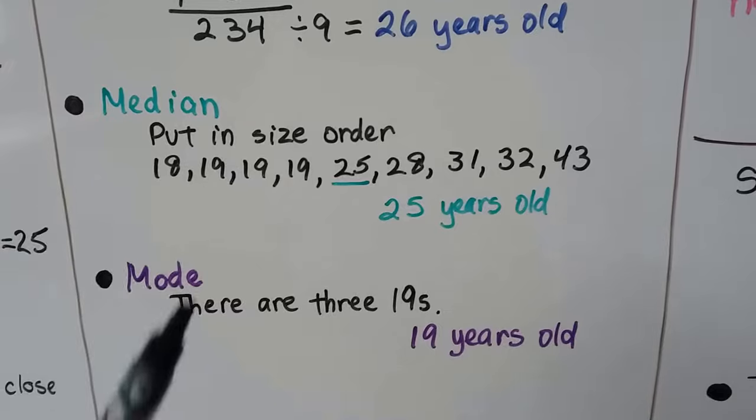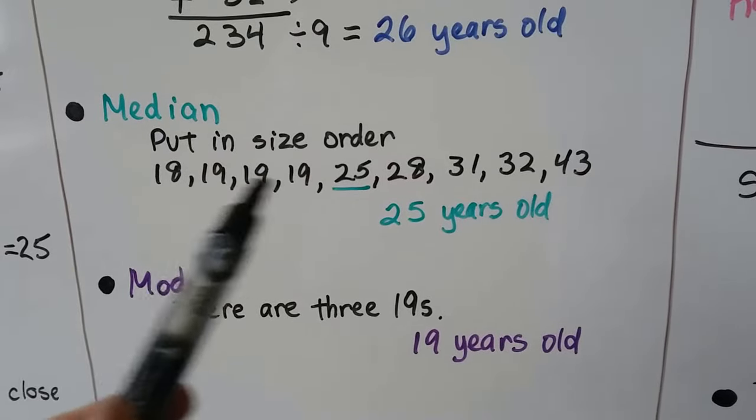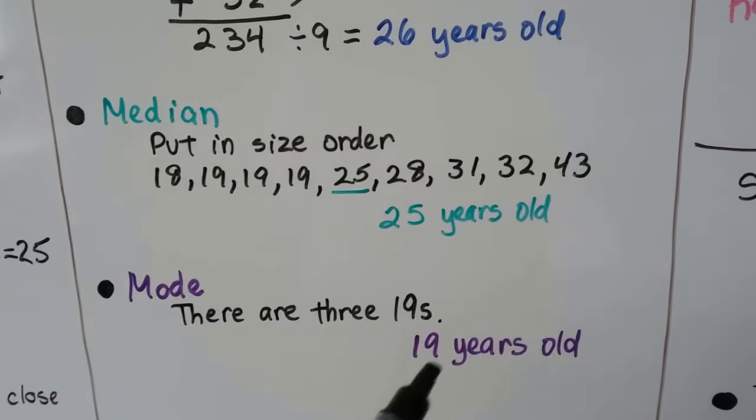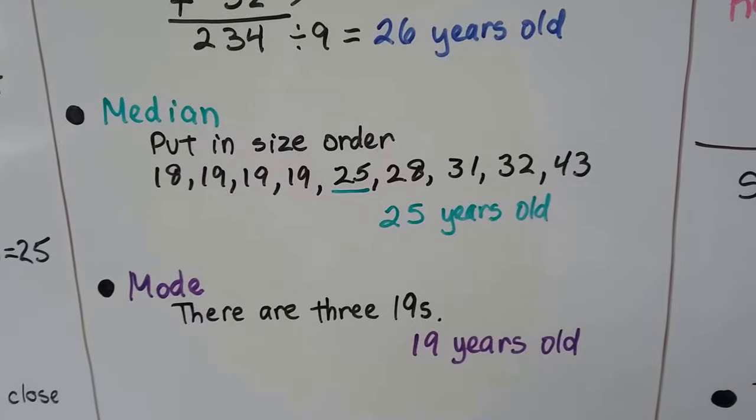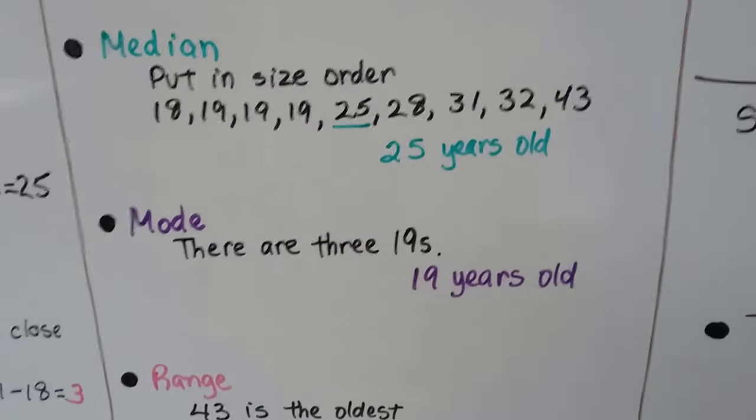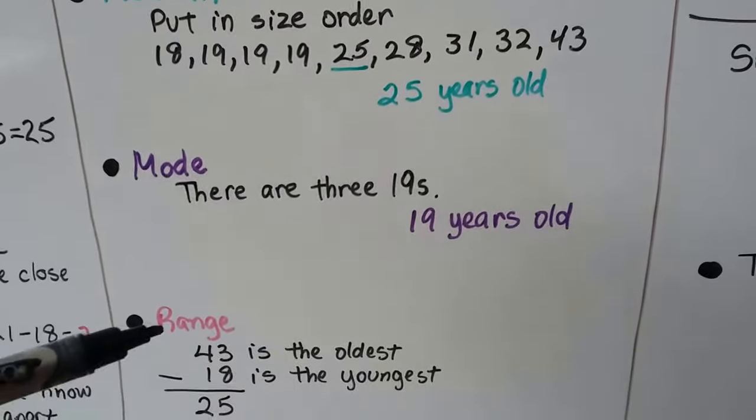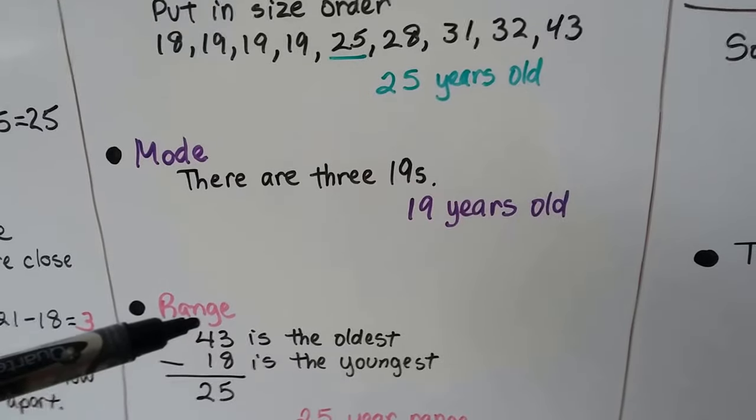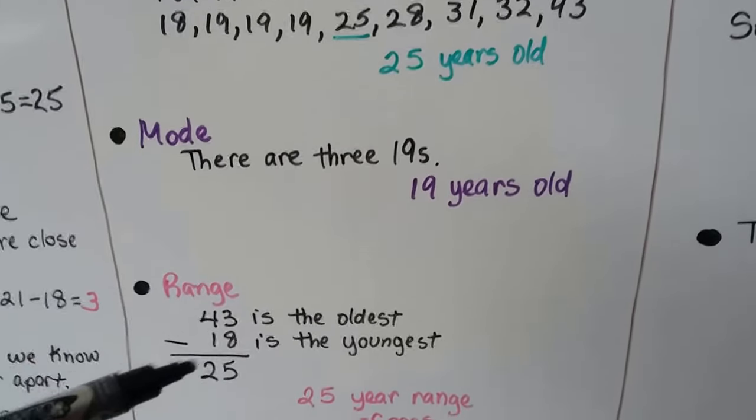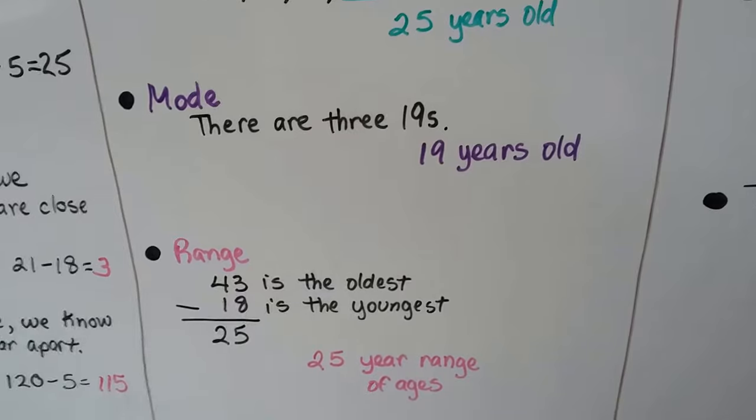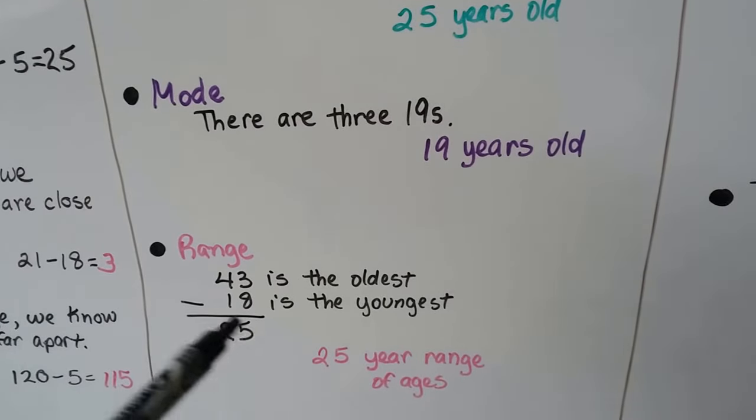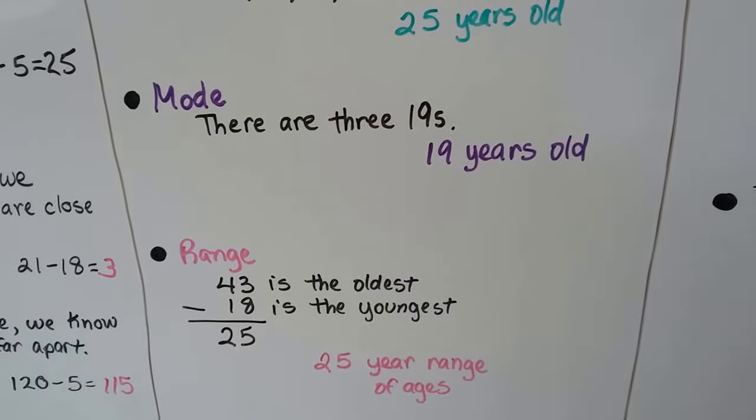The mode, there's three 19s. That's the number that occurs the most. So 19 years old is the mode. The range is 43 is the oldest age and 18 is the youngest age. So the range is 25 years of ages. That's the range in age, 25.